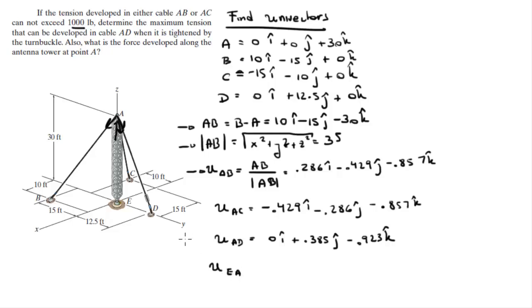We have one more unit vector — for the tower, going from E to A. Point E is at the origin, so it's just unit vector EA, which comes out to +1k. It goes straight up, so there's not much to think about there.